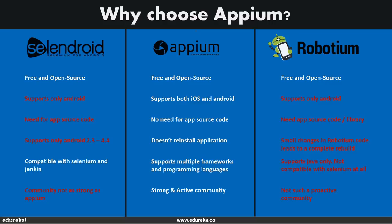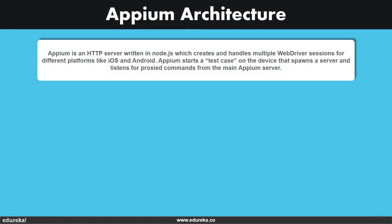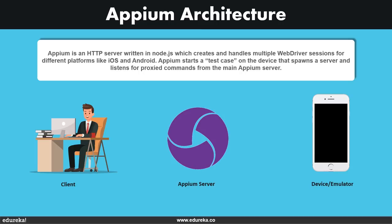Now let's discuss the architecture that makes Appium so brilliant. Appium is basically an HTTP server written in Node.js which creates and handles multiple WebDriver sessions for different platforms like iOS and Android. Appium follows the client-server architecture. The client, who is also the tester, sends requests to the Appium server. The Appium server with its API decides how to handle the request and then sends these requests to the device or emulator. The device or emulator runs the test cases and sends back the response to the Appium server, which in turn sends it back to the client.